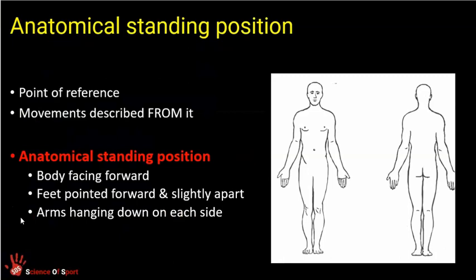The first important phrase you need to know is the anatomical standing position. The image on the right shows the anatomical standing position — it's the starting point from which we describe movements. From the bullet points, it says: body facing forwards, feet pointed forwards and slightly apart, arms hanging down on each side. So it's a relaxed, normal standing position.